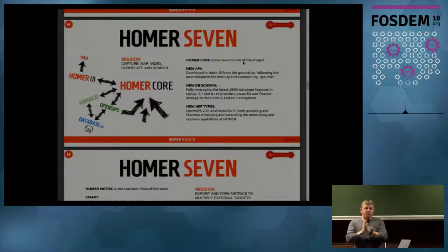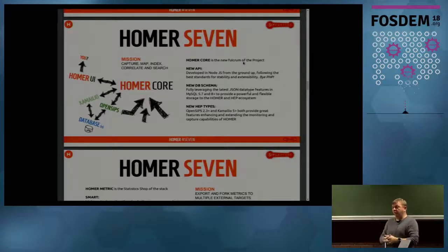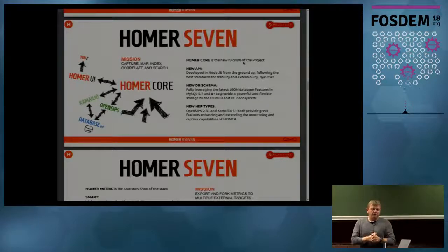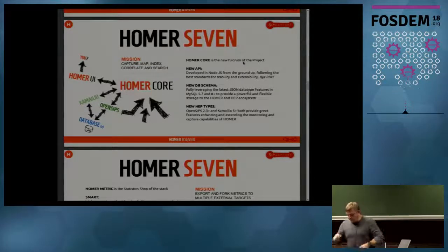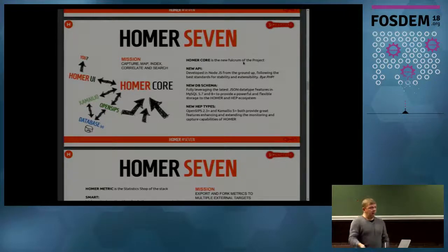About the new DB Schema: if you remember from HOMER 5, you had to create tables, handle rotation, and so on — that was a pain. Especially if you needed special fields to parse SIP messages. Forget about it — it doesn't exist anymore. Now we have a schema-less design. We use a nice implementation in MySQL 5.7: the JSON type for protocols. We also have new HEP types. For example, OpenSIPS and Kamailio support these new HEP types using event sockets, so data will be automatically inserted.